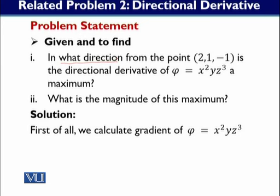The directional derivative is maximum in the direction of del phi — meaning in the direction of its gradient. That is the first part. For the second part, the theorem states that the maximum value of the directional derivative is equal to the magnitude of the gradient, i.e., |del phi|. If you know this theorem, you can handle this problem very easily.